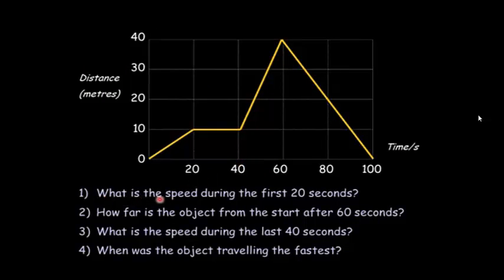So here's a typical kind of question you might get. What is the speed during the first 20 seconds? Well, it's going from 0 to 10 in 20 seconds, so it's 10 meters in 20 seconds, so the answer is 0.5 meters per second. Second question here: how far is the object from the start after 60 seconds? You can look up the graph here. 60 seconds, it is a distance of 40 meters away.